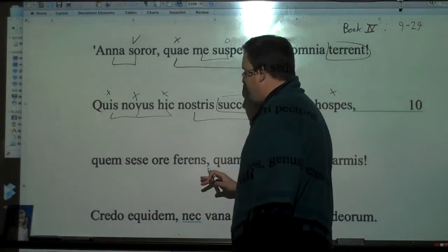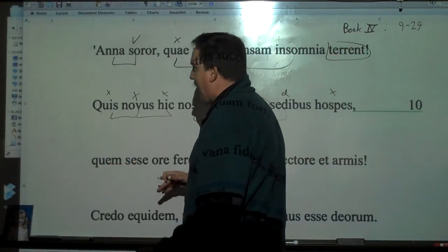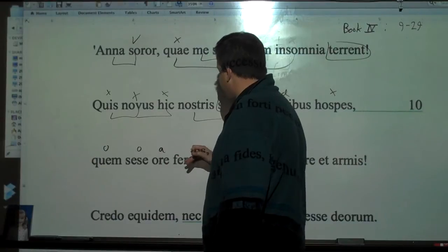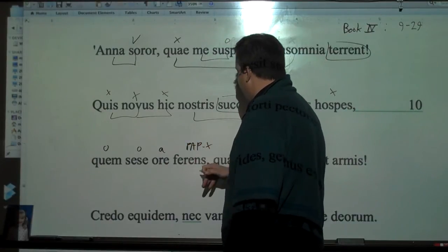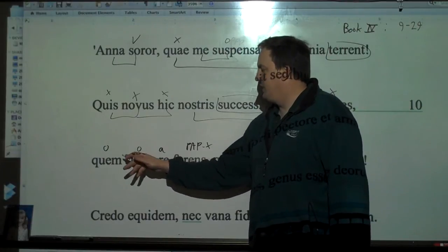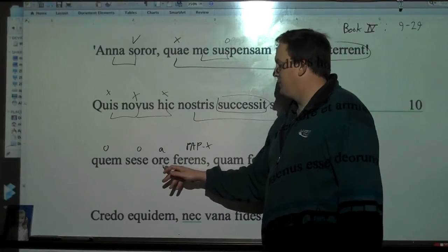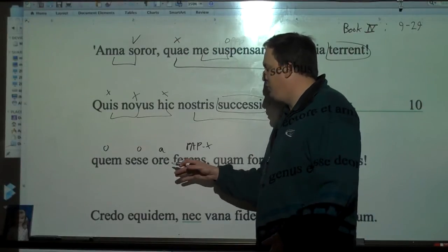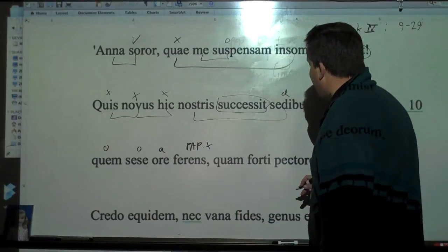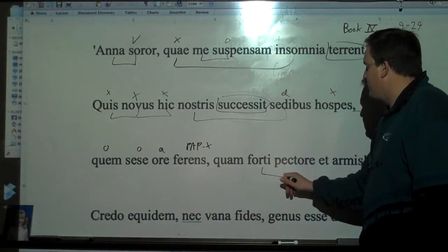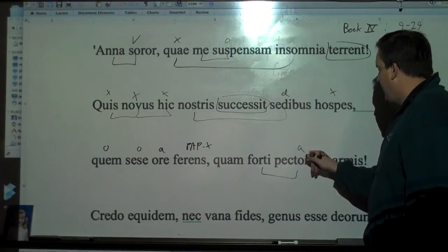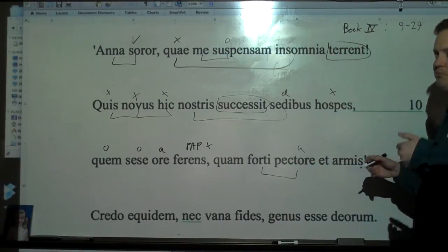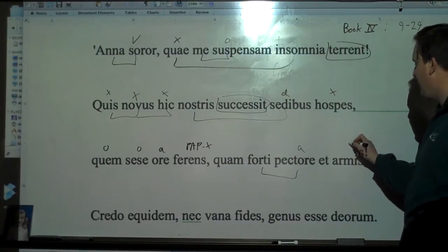And then quam se ipse ore ferens. Now if you look at the book, you'll see the notes there say like how noble an appearance. It is kind of a really awkward thing in English to deal with. Of course, ferens is a PAP in the nominative. So like bearing himself in respect to what's in his face, you can see the grammar there. You can say how noble an appearance. And then quam here is how, how with a forti pectore, with a brave heart and armis, and arms. He's a brave guy, he's traveled all around the Mediterranean.